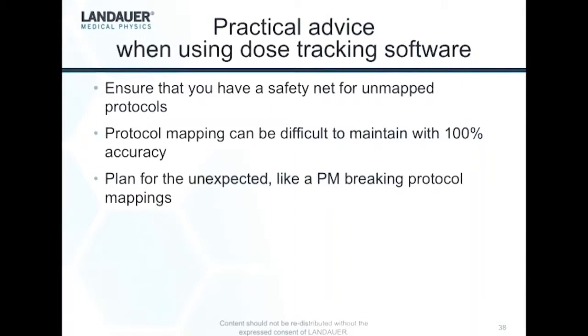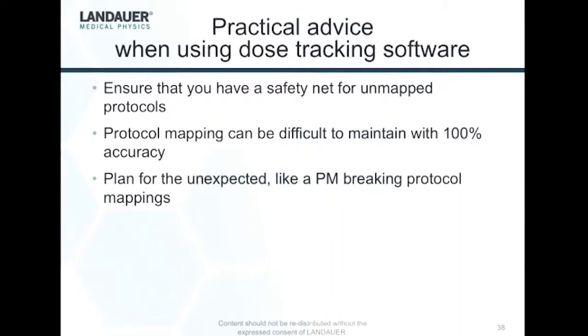That would be my recommendation, and I'll give a few examples. In Radometrics, there's something called a default exam DRL that you can set up that applies to all patients. In DoseWatch, they have a similar feature — it's called DRL — where you can set values and choose which studies it applies to and which ones it doesn't. In NexoDose, you can again select all protocols or select some. Every single one of them has some way to handle this. They're all a little bit different, but you should look into some method that applies to all protocols.